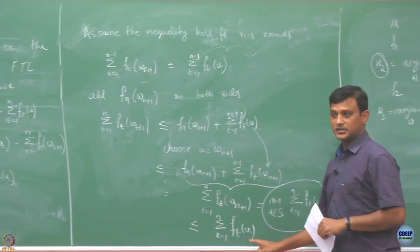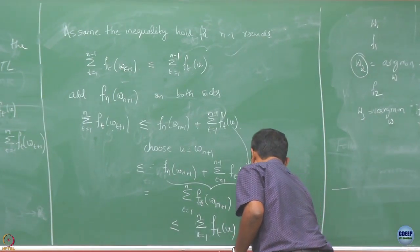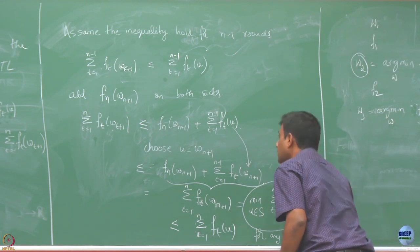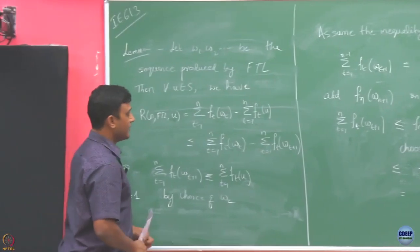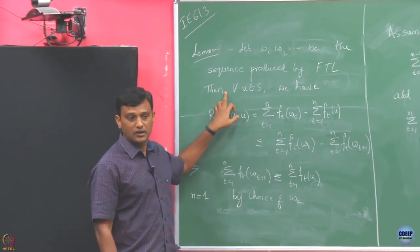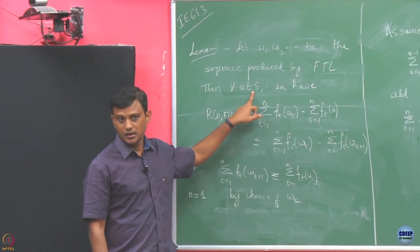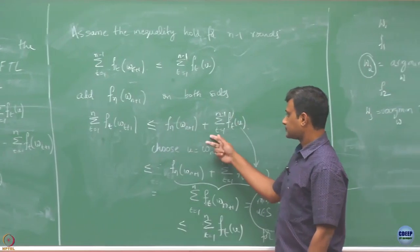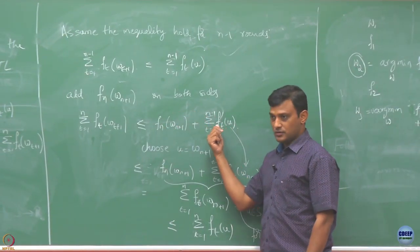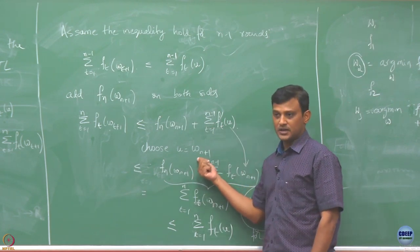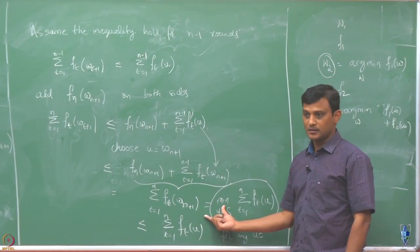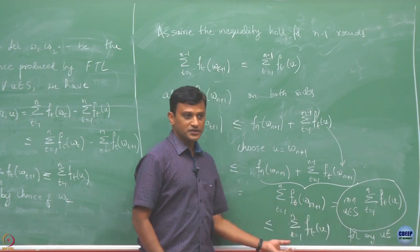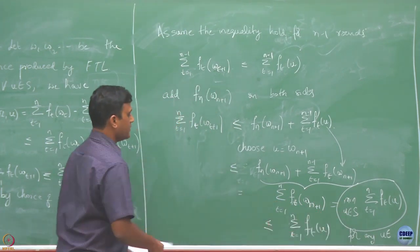This holds for any U. Recall that I first said this inequality holds for any U belonging to S. When I came to this step, since it is true for any U, I took a specific U to be W_{n+1} and got this result. But now this is the minimum over all U, so for any particular U this should be an upper bound. What I have shown is exactly what we wanted.